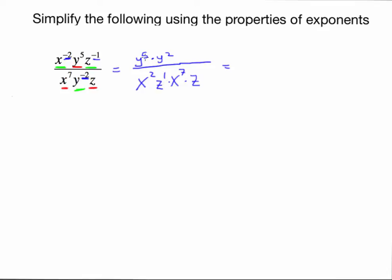Up top we have 5 y's being multiplied by 2 more y's — we can add 5 plus 2 to get y to the seventh. Down below, we only have multiplication between these variables. How many total x's? I have 2 and I add 7 to get 9 total x's being multiplied. For the z's: z to the first times z to the first — I have 2 z's being multiplied, giving z squared.